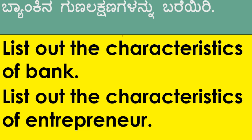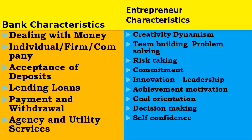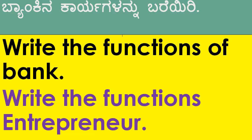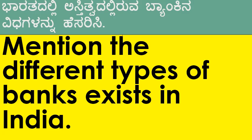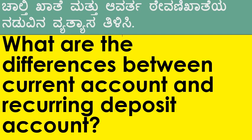List out the characteristics of bank and entrepreneur — both given in the same slide, very simple. Functions of bank and functions of entrepreneur: any one of these two is guaranteed to come. Please learn all these points to score very good marks. Mention the different types of banks existing in India: RBI, cooperative society, land development bank, industrial development bank, and Exim Bank. Also learn differences between current account and recurring deposit account.